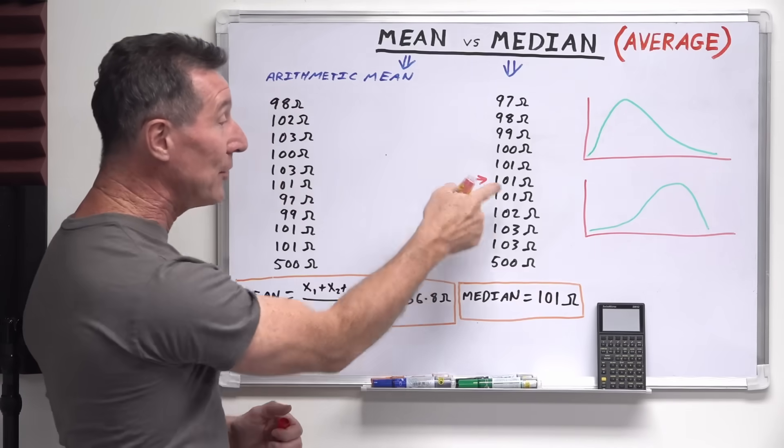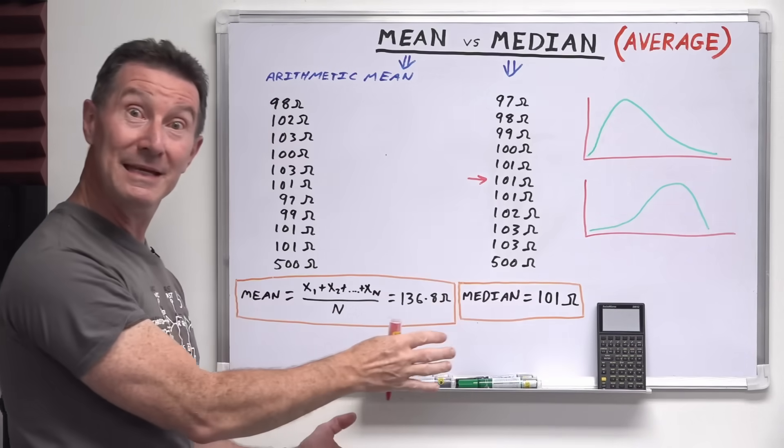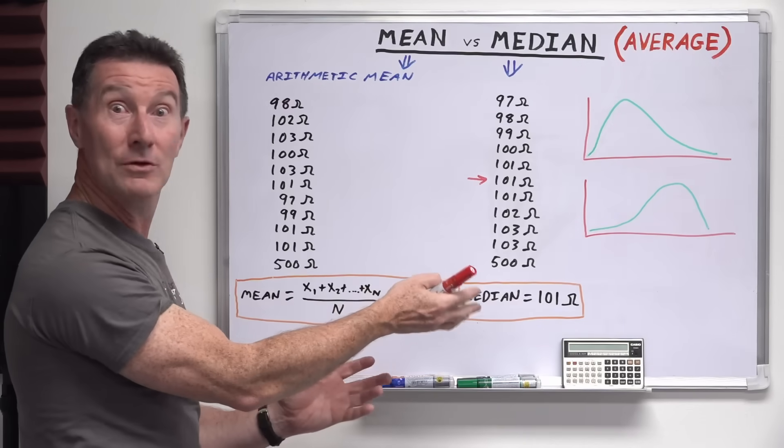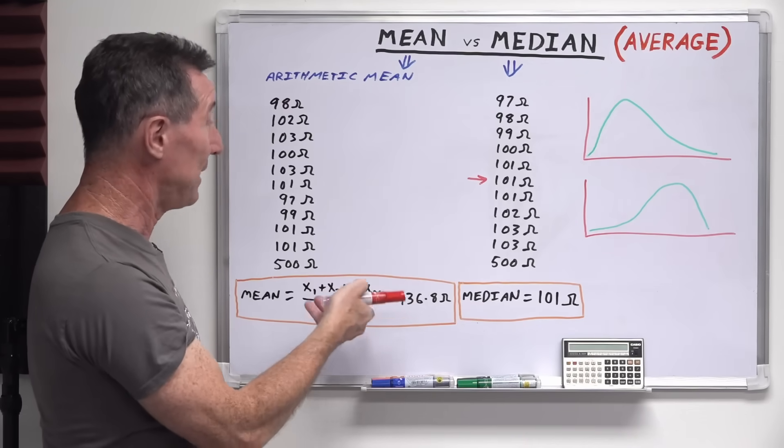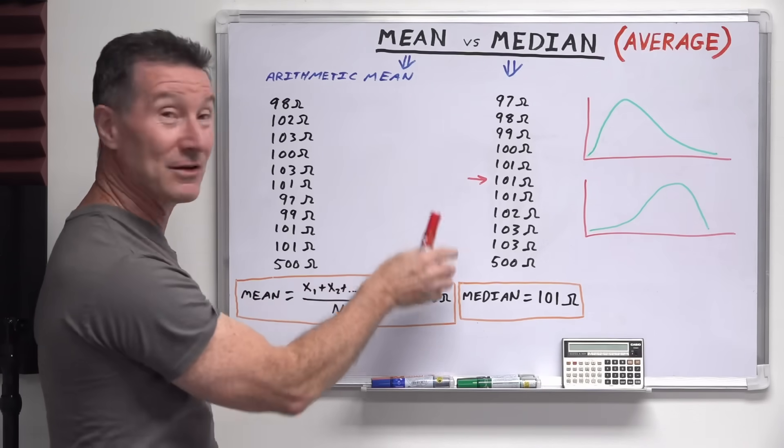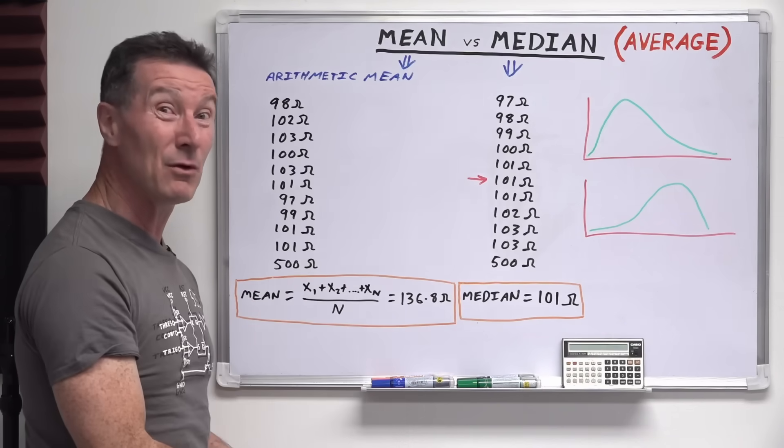But it doesn't matter, you can have five million data points, you pick the one that's right in the middle. And bingo, that value becomes your median value. So you can see that median is actually really simple to calculate. It's even simpler than the arithmetic mean because you don't have to do any division. You just pick the number, sort them, pick the number that's in the middle. No worries.